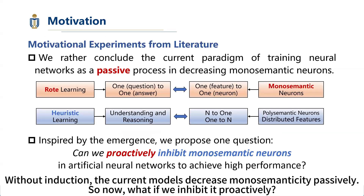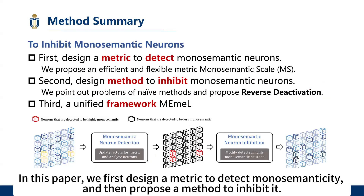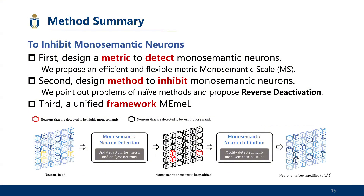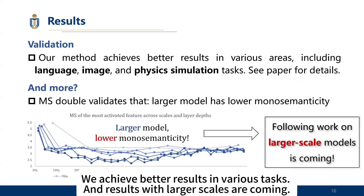Without induction, current models decrease monosematicity passively. So what if we inhibited it proactively? In this paper, we first design a metric to detect monosematicity, and then propose a method to inhibit it. We achieve better results in various tasks, and results with larger scales are common.